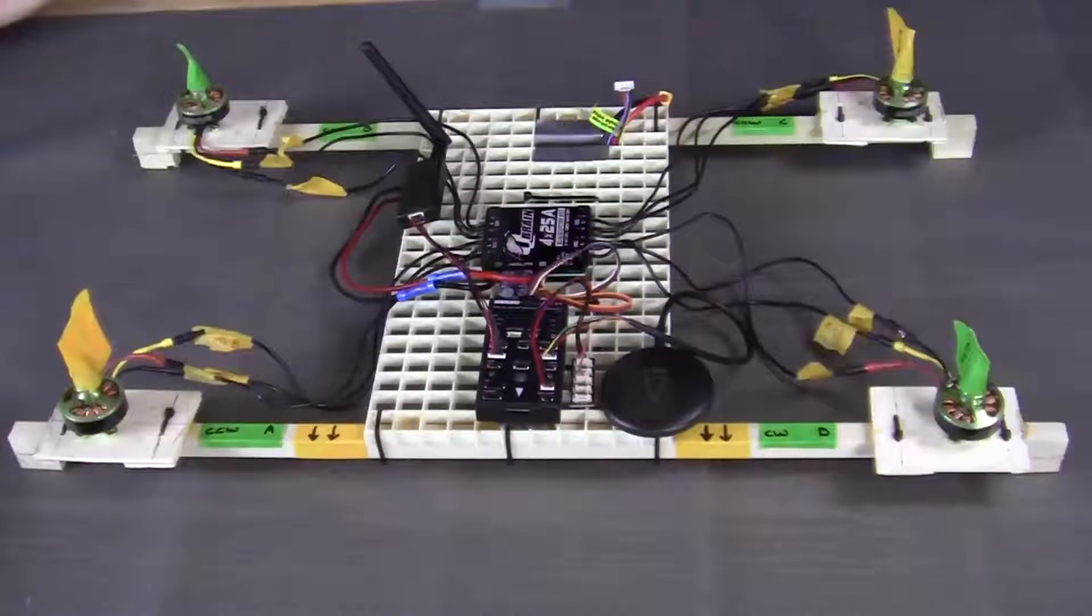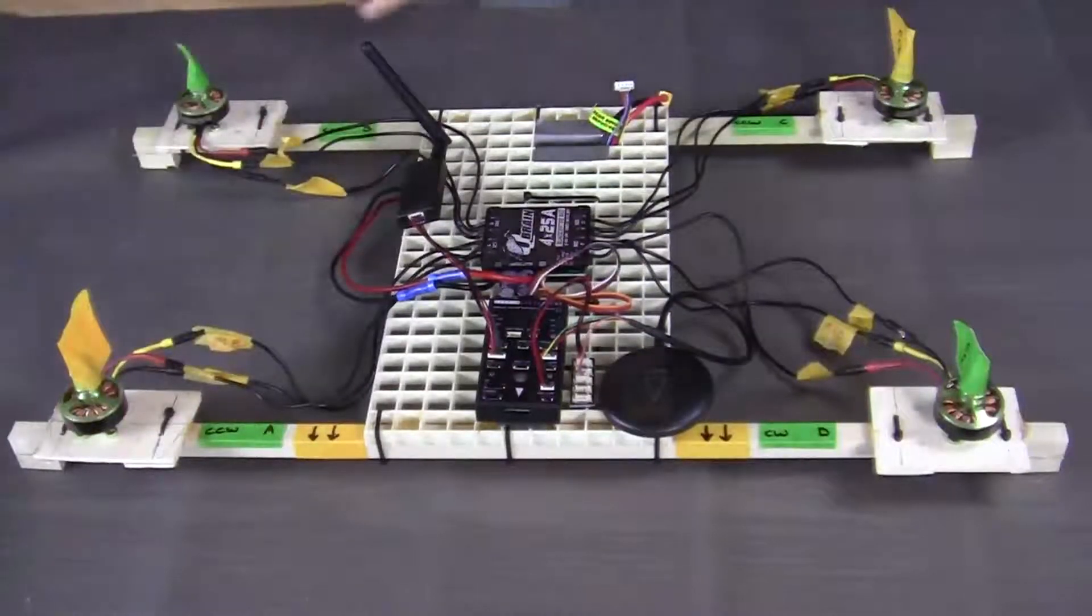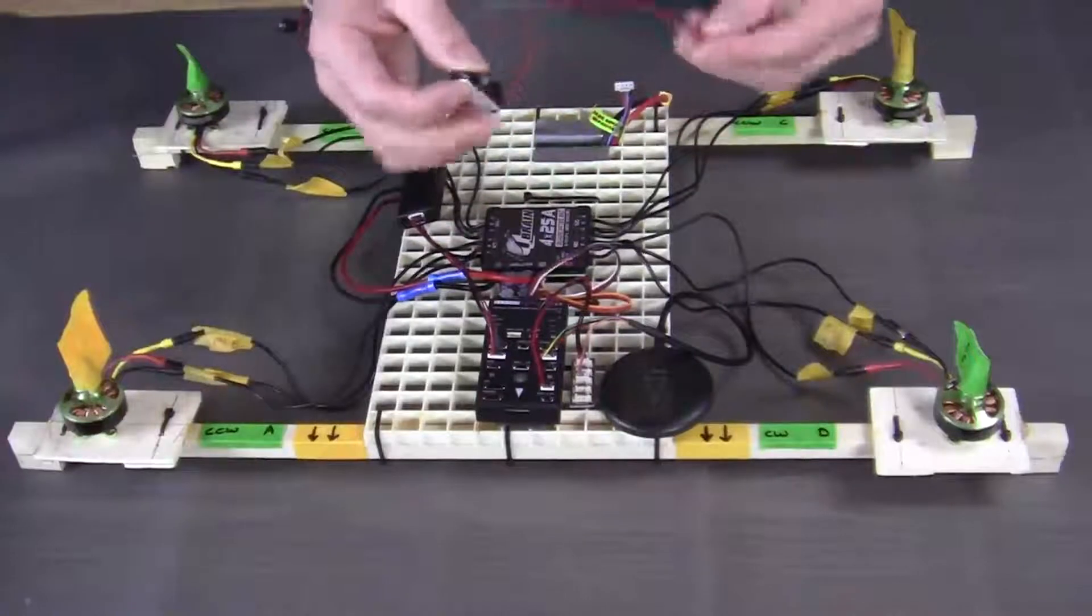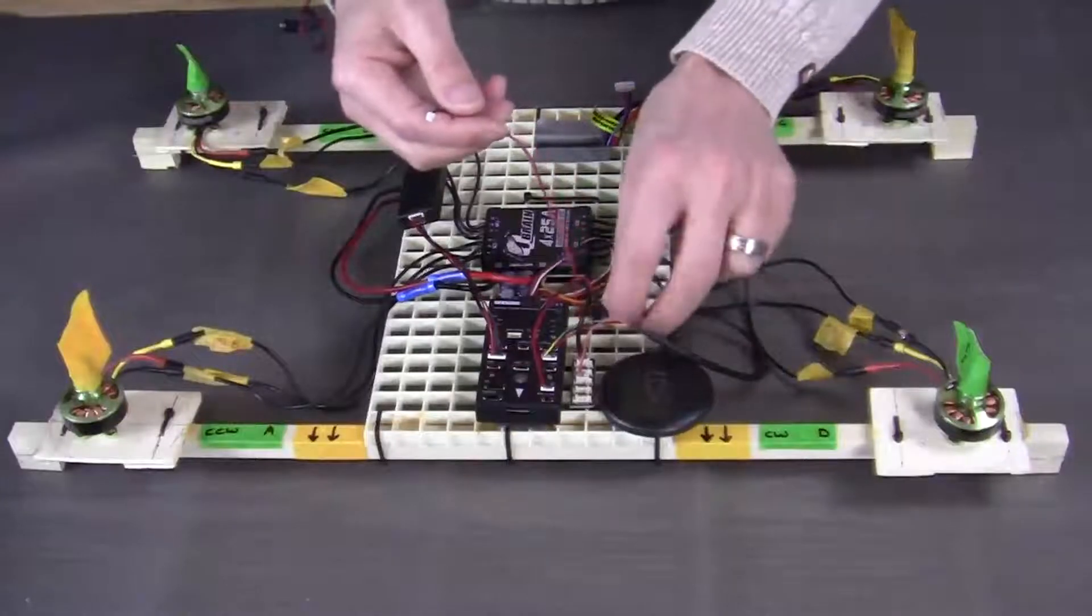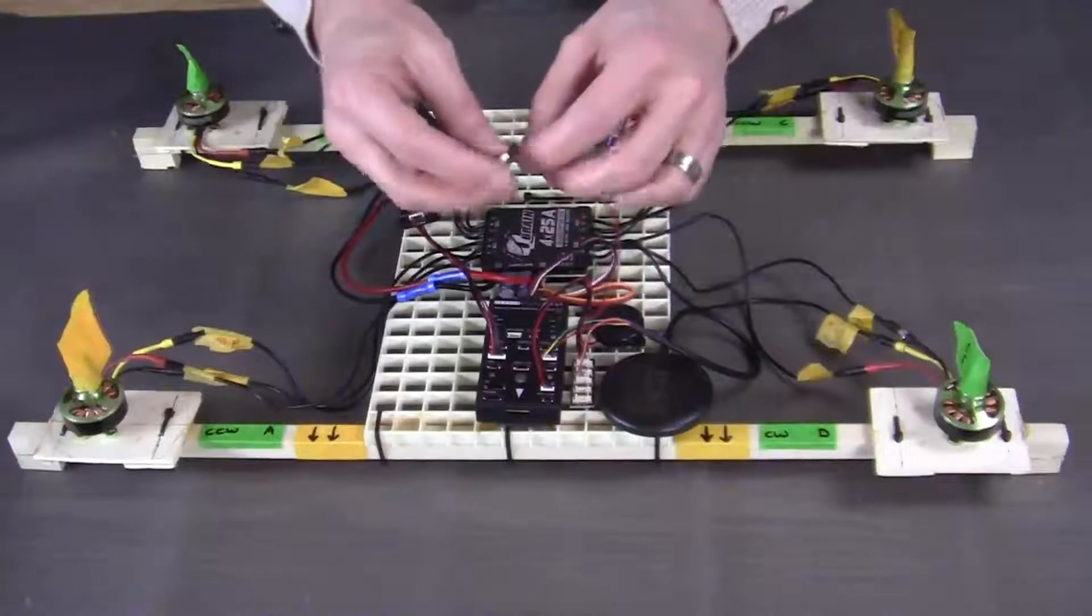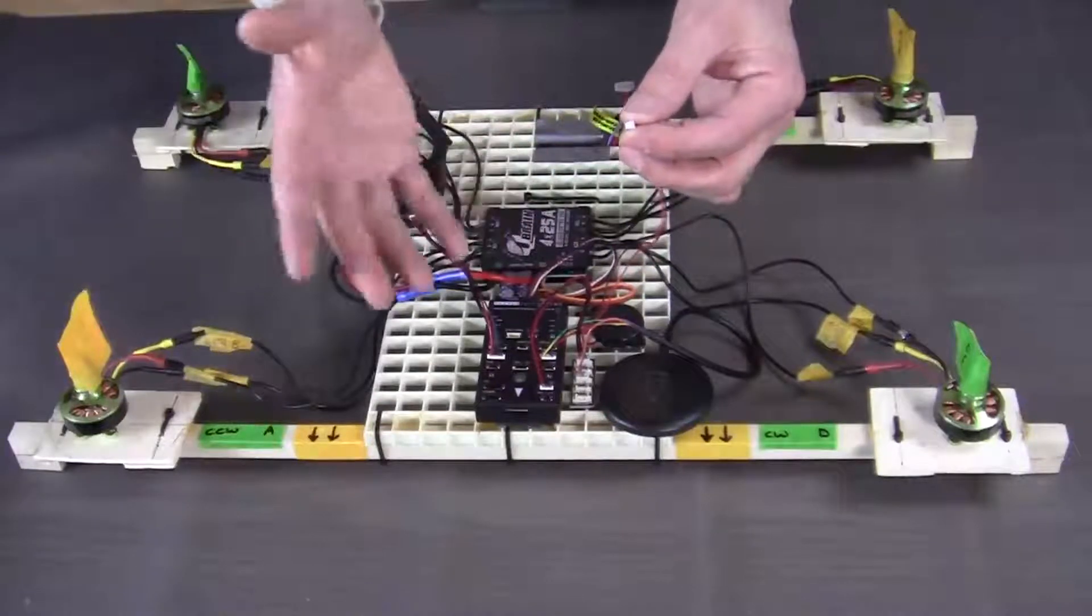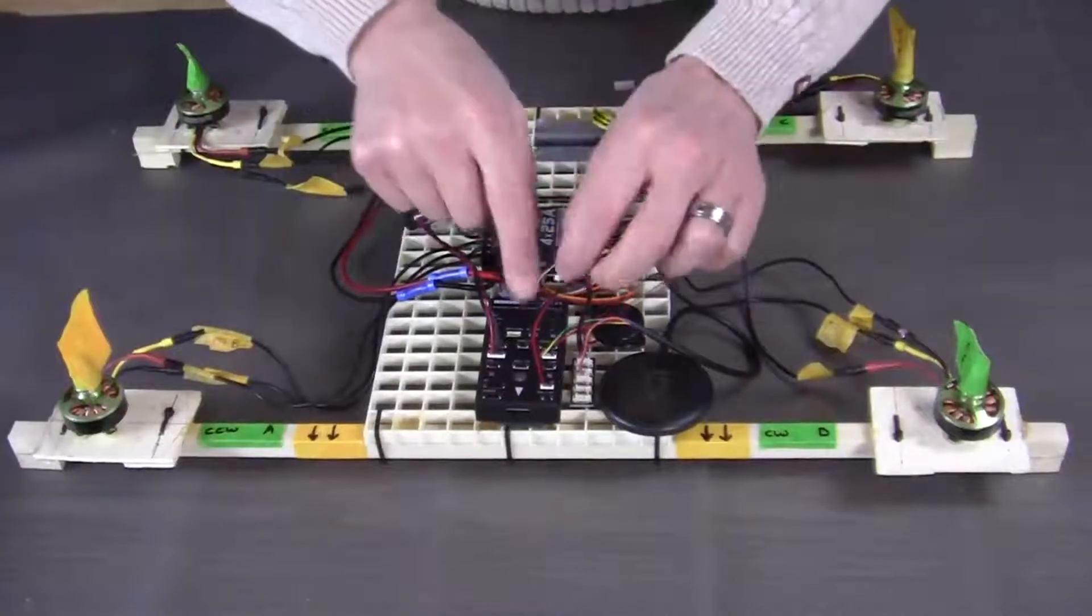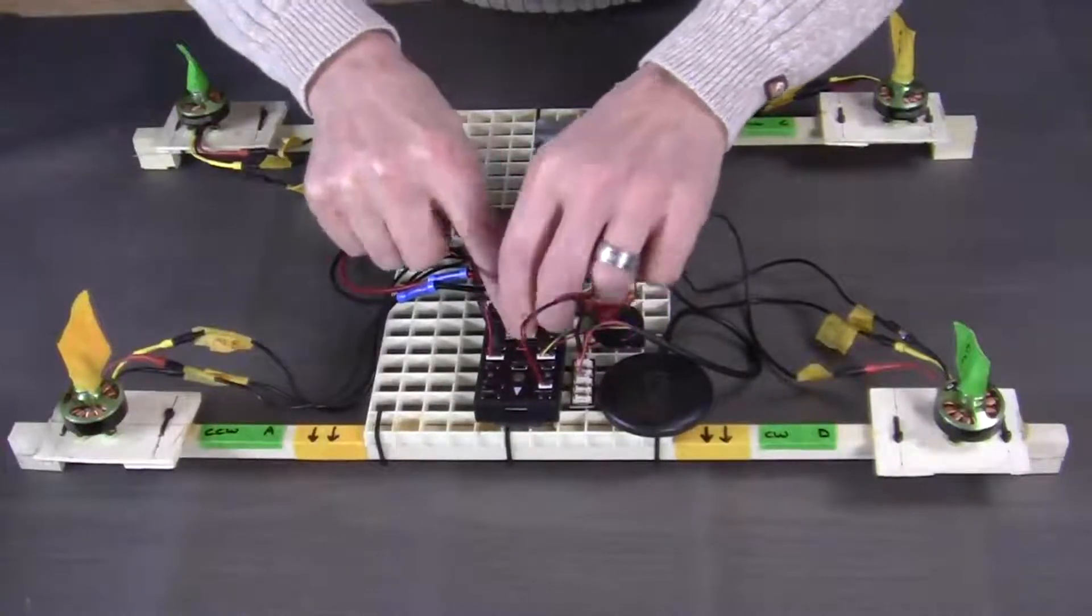The next component that we want to connect is going to be the safety buzzer. Now this buzzer gives a warning when the quadcopter is armed and also will emit different tones when we're calibrating the ESC. You can also set the PixHawk to play some music on startup. It's quite nice. So let's go ahead and connect this buzzer and it goes into the buzzer socket on the PixHawk.